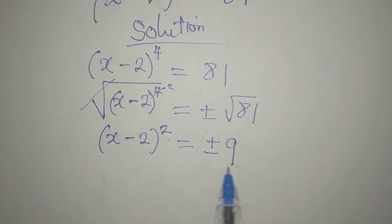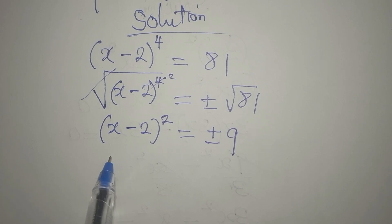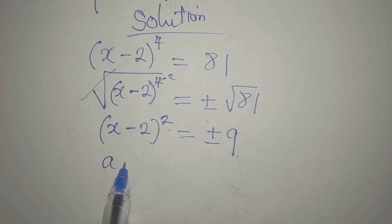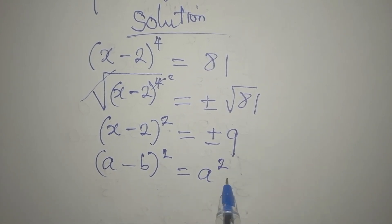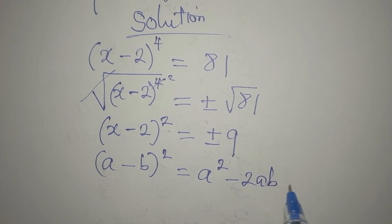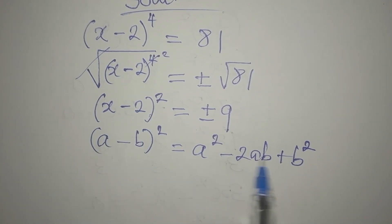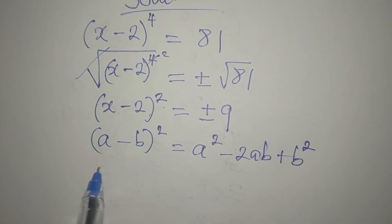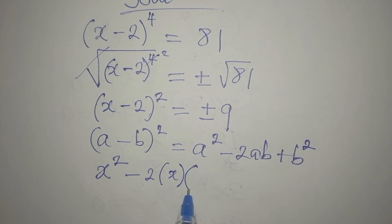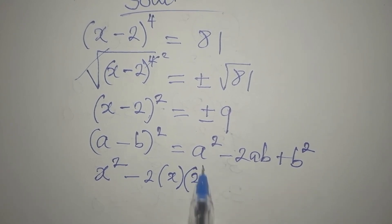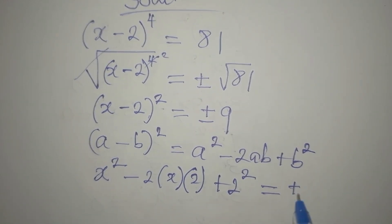I don't want us to take the square root anymore. Let's expand what we have here. Remember that if you have a minus b squared, this is going to be a squared minus 2ab plus b squared. So we write x minus 2 squared as x squared minus 2 times x times 2 plus 2 squared, and this will be equal to plus or minus 9.